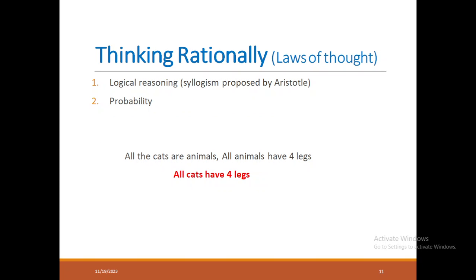Coming to thinking rationally — it is based on laws of thought. In 345 BC, Aristotle came up with a mechanical concept for how to conclude something, which we call syllogism — a logical reasoning. For example, given two premises: 'all cats are animals' and 'all animals have four legs,' we conclude 'all cats have four legs.' The common term 'animal' disappears in the conclusion. This syllogism is a mechanical way to think rationally and correctly. You have to incorporate logical reasoning to build a system that thinks rationally.